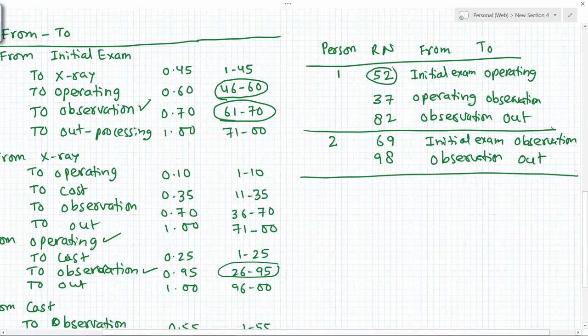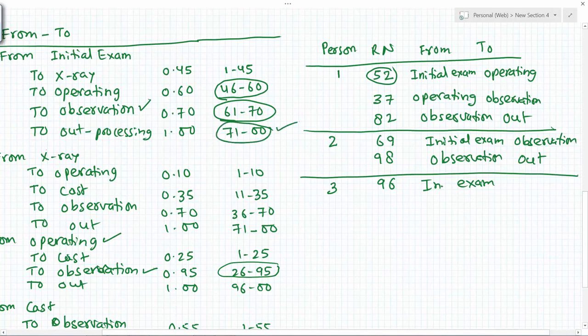Similarly, the third patient, random number 96. From initial exam, 96 means this one, so this patient is out just after one trip to initial exam. This way you can simulate 10 patients.